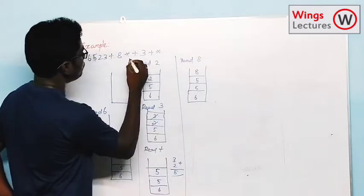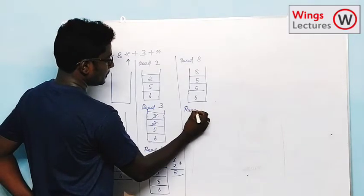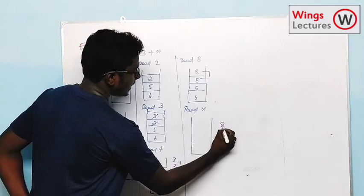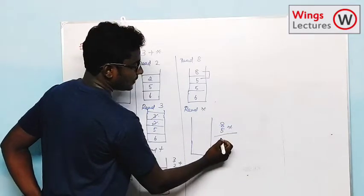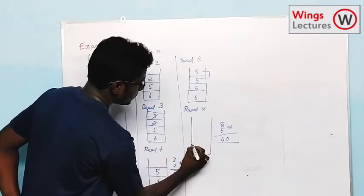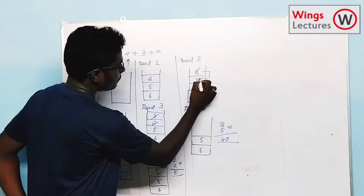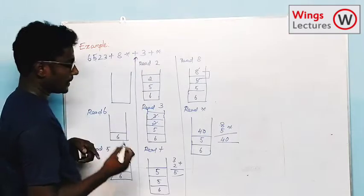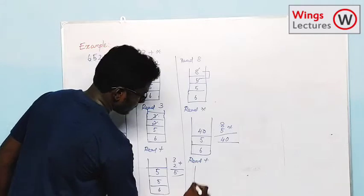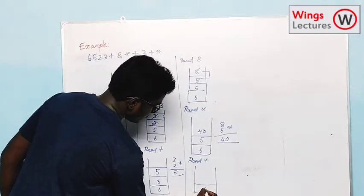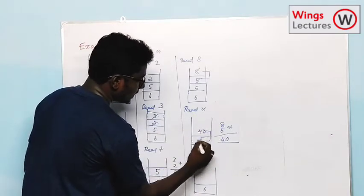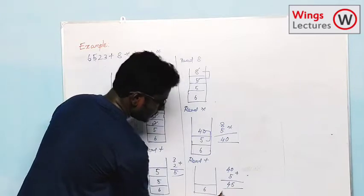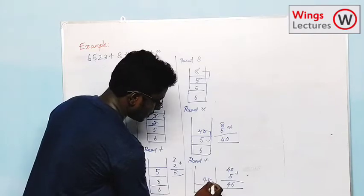After that I have to perform a multiplication operation. Read star. As per the logic, I have to take the last two elements — 8 and 5 — and perform multiplication. 8 times 5 is 40. So I remove those two and push 40 into the stack. Now I read plus. I have to take the last two elements: 40 and 5. I perform addition — 40 plus 5 is 45. Push 45. The stack now has 6 and 45.